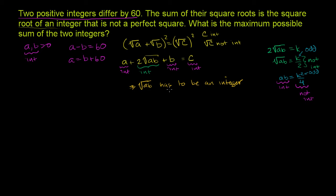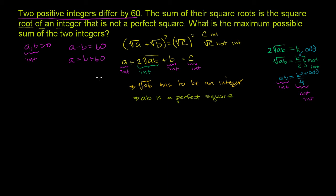If the square root of ab has to be an integer, then ab has to be a perfect square. That means a times b is a perfect square. We can substitute a = b + 60, so (b + 60) times b equals n squared, where n is an integer.